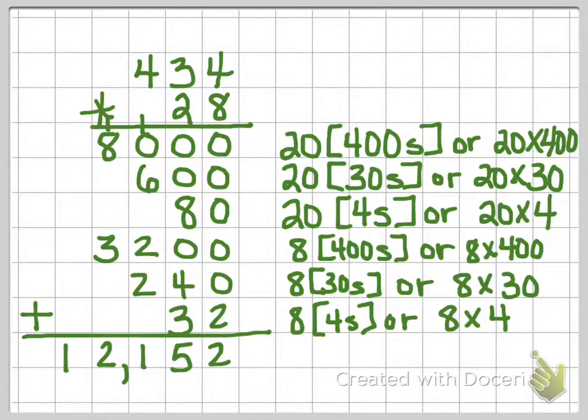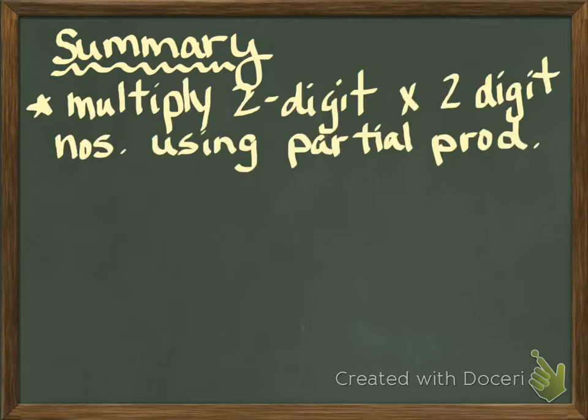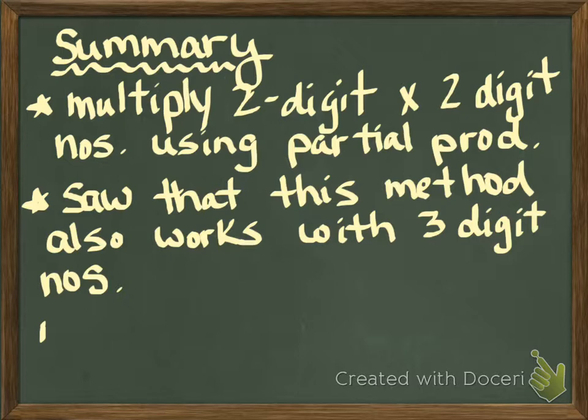And this is partial products, part 2, still using that same strategy that we used with part 1, except we've added some digits. So to summarize this lesson, we learned how to multiply two-digit times two-digit numbers using partial products. We saw that this method also works with three-digit numbers. And if we continue to do four-digit and so on, it should still work. You just have a really long problem.